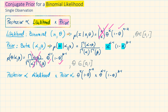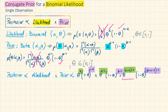Simplifying this, we have theta to the power of alpha plus x minus 1, times 1 minus theta to the power of beta plus n minus x minus 1. We can see that this has the form of a beta distribution, so we can write this as being proportional to a beta distribution with parameters alpha plus x and beta plus n minus x.